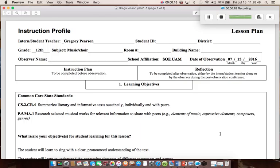The Common Core Standards that I will utilize today are CS2 CR4, to summarize literary and informative text succinctly, individually, and with peers. Also P5MA1, to research selected musical works for relevant information to share with peers: elements of music, expressive elements, composers, genres.